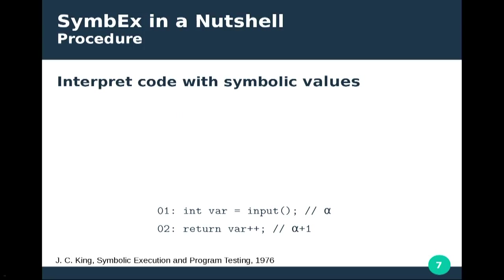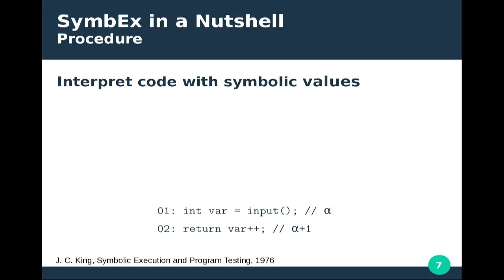Symbolic execution is a special technique that has been around for nearly 40 years. It's a code interpreter that uses a special modified way of running code. Instead of assigning inputs a specific value, it assigns a symbol — in this example, when we assign an input to variable var, we assign symbol alpha representing any possible value. When we increment that variable, it becomes alpha plus 1. When you hit a branch instruction like an if-statement, since we don't know the value of the symbol, we fork execution and take both branches, keeping track of the arithmetical constraints on the symbols that must hold for each branch. We use a solver to check if those constraints are satisfiable and only explore feasible branches.